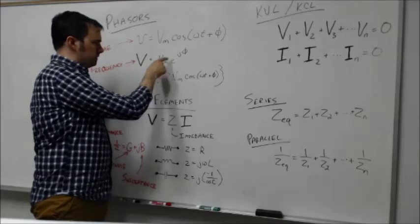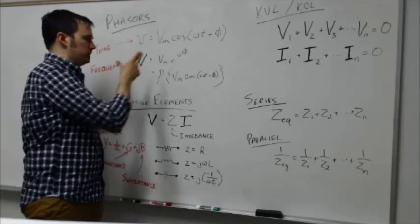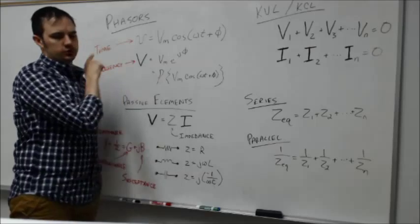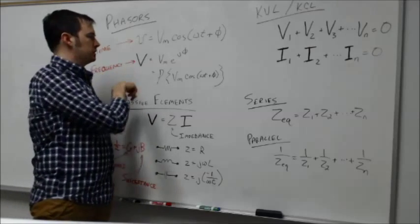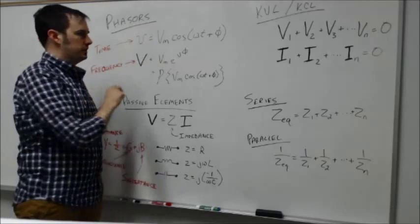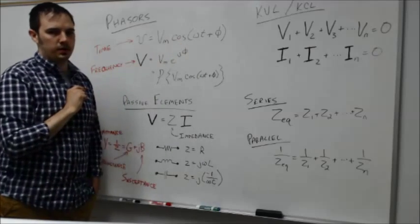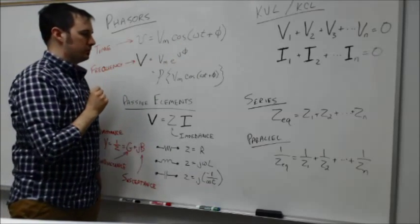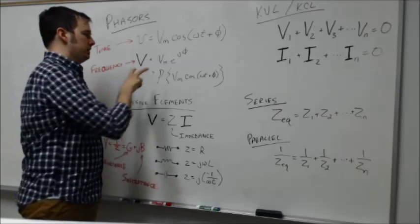We only have the amplitude information and the phase information, but the frequency information is not there. If we were doing an inverse transform to go from the phasor notation back into the standard notation in the time domain, we would need to be given information about the frequency separately because the phasor itself does not tell us that.